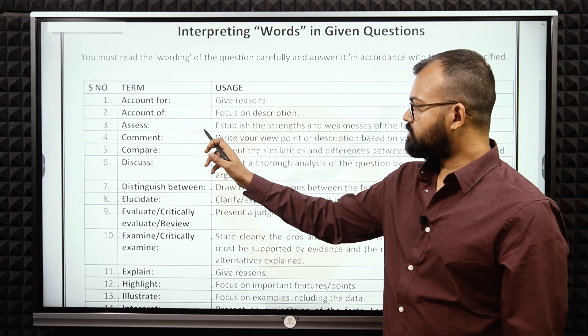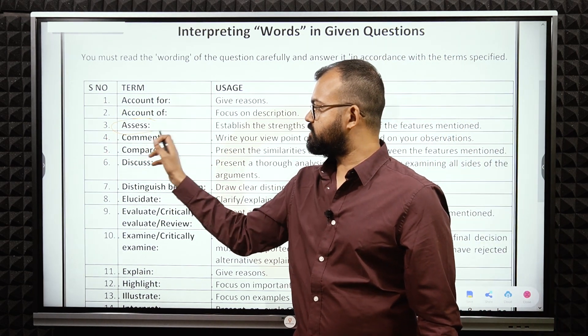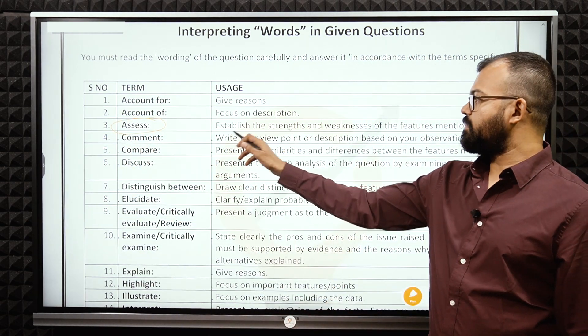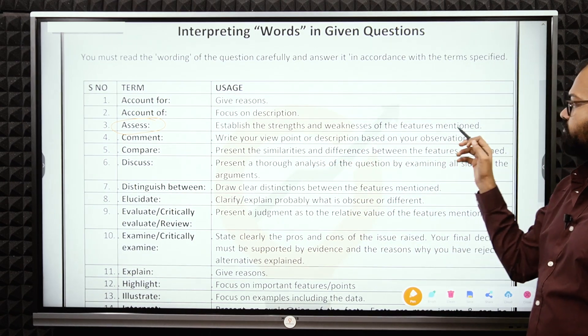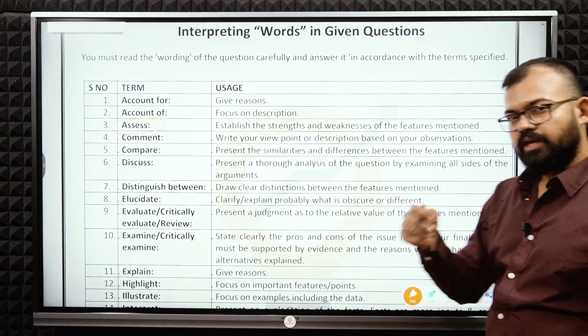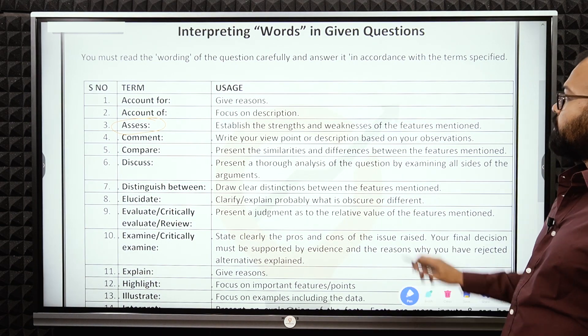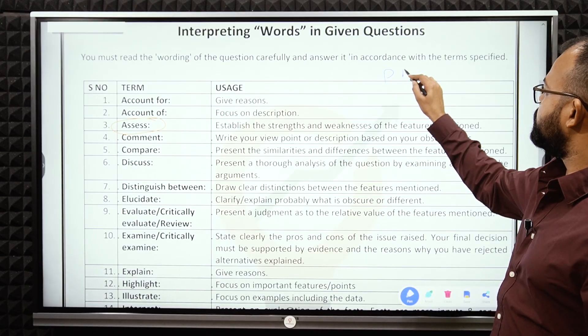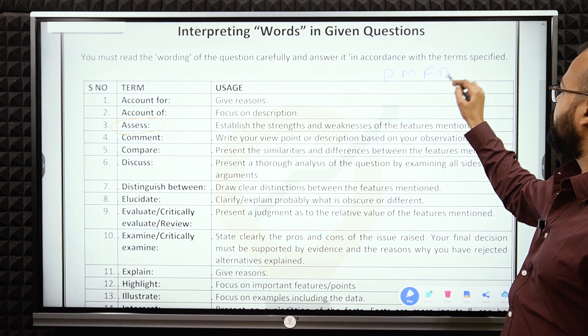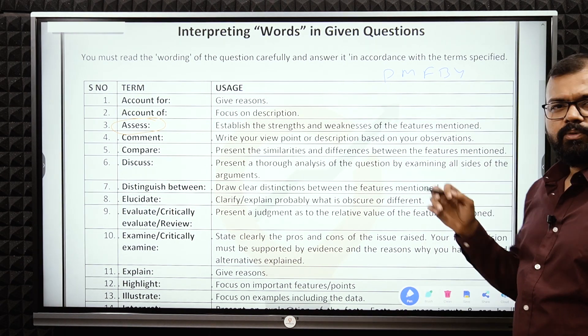The third one is assess. Assess means establishing strength and weakness of the features mentioned. Like for example, you take one very popular example: Pradhan Mantri Fasal Bima Yojana. This is a very important scheme, very popular, especially for agriculture and the farmer crisis that we are facing.